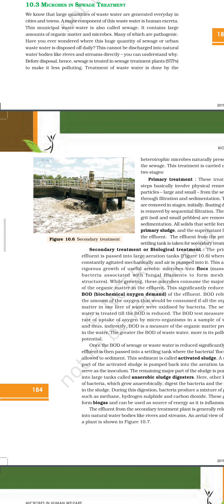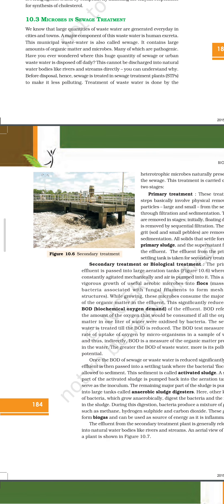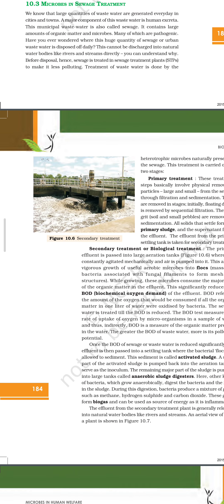Have you ever wondered where this huge quantity of sewage or urban wastewater is disposed of daily? This cannot be discharged into natural water bodies like rivers and streams directly. The reason is because the water gets contaminated with waste, organic matter, and inorganic effluents which are hazardous for nature.